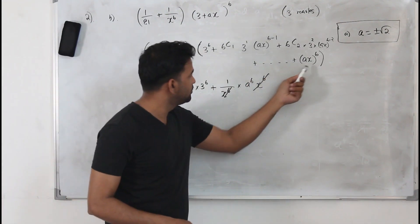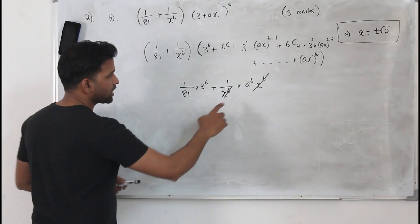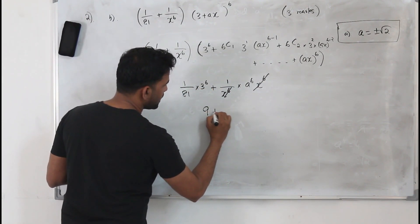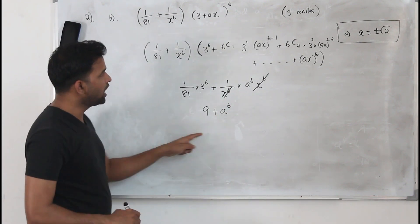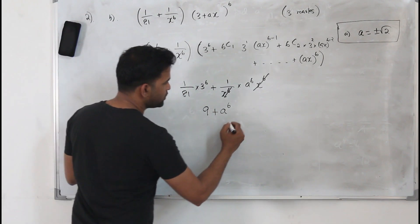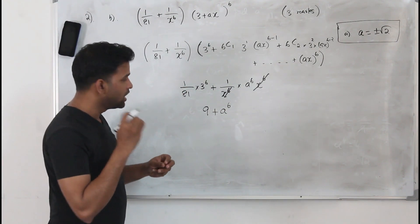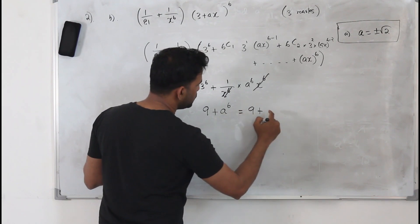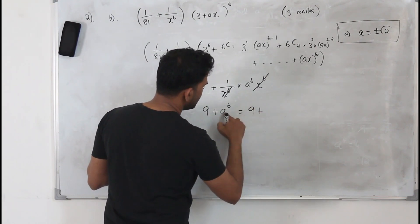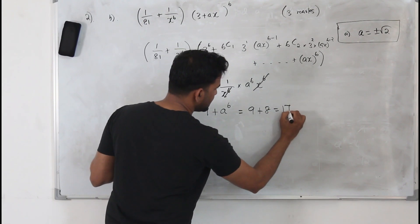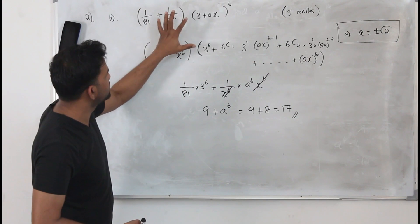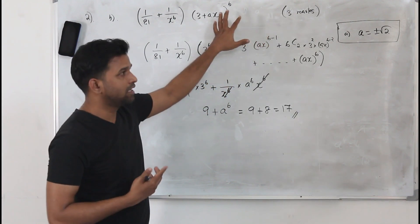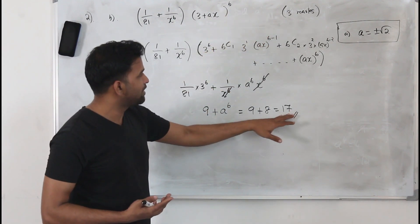When you multiply 1/x^6 by the last term (ax)^6, the x^6 cancels, leaving a^6. With a = ±√2, a^6 = (√2)^6 = 8. Also, 3^6 / 81 = 729 / 81 = 9. Adding both contributions: 9 + 8(√2)^6 simplifies and the final answer — the term independent of x — is 70.